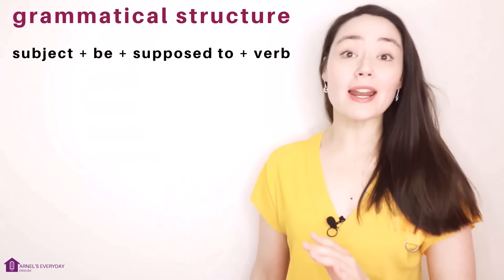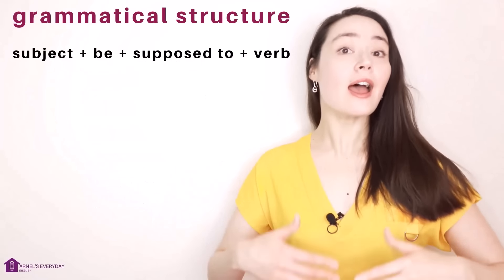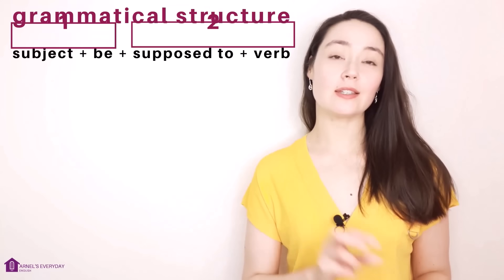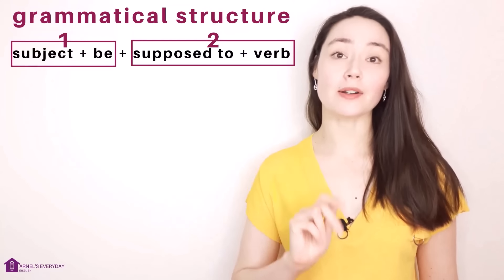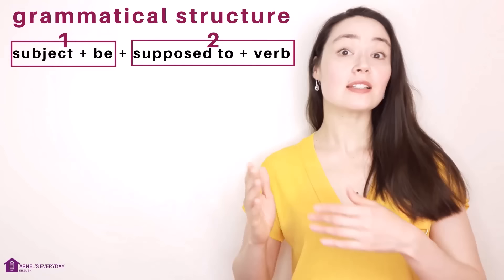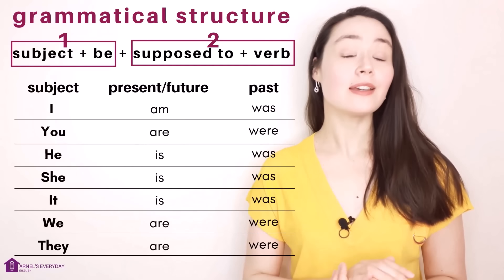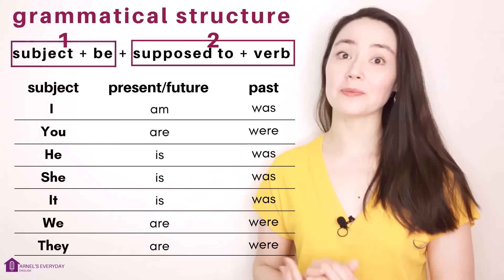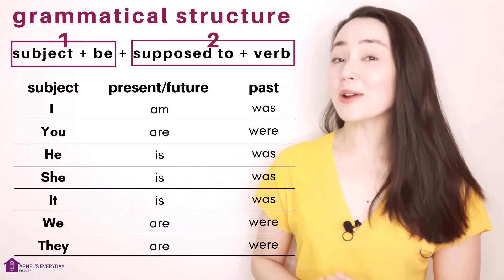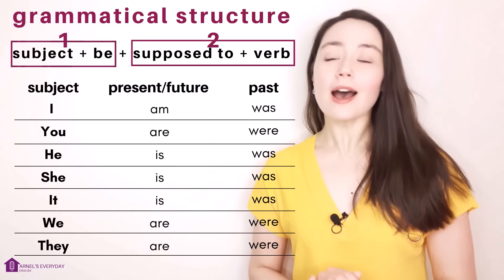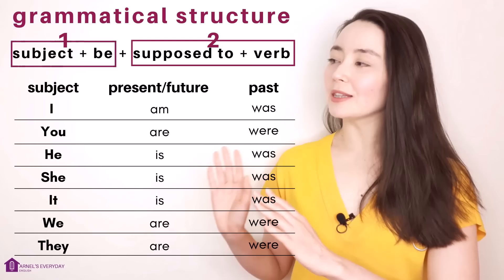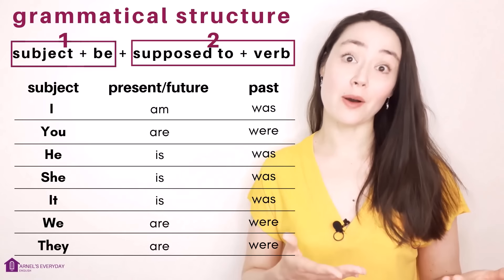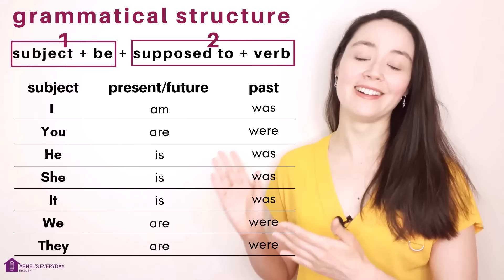Let's start with the grammatical structure and then we'll go into more detail. We can do this in two parts. Subject plus 'be.' Here are the 'be' forms you need to remember. I think you're already familiar with these, but I just want to do a little review because in this lesson, when I say 'be,' you know I mean one of these.